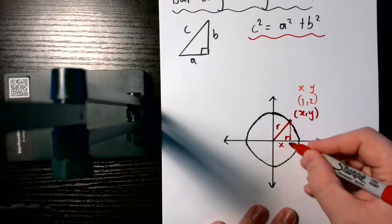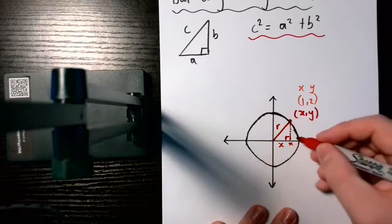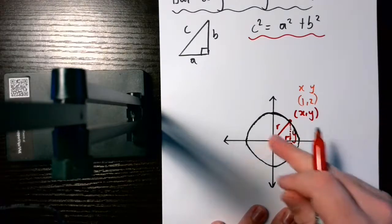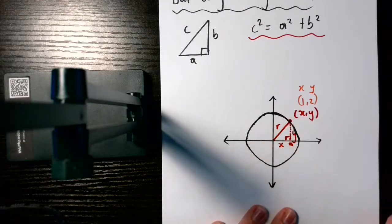So, this has a side length of x, because we come out here to x. And it has a side length, a vertical side length of y. So, you'll see side length of x, side length of y because this is the point (x,y).